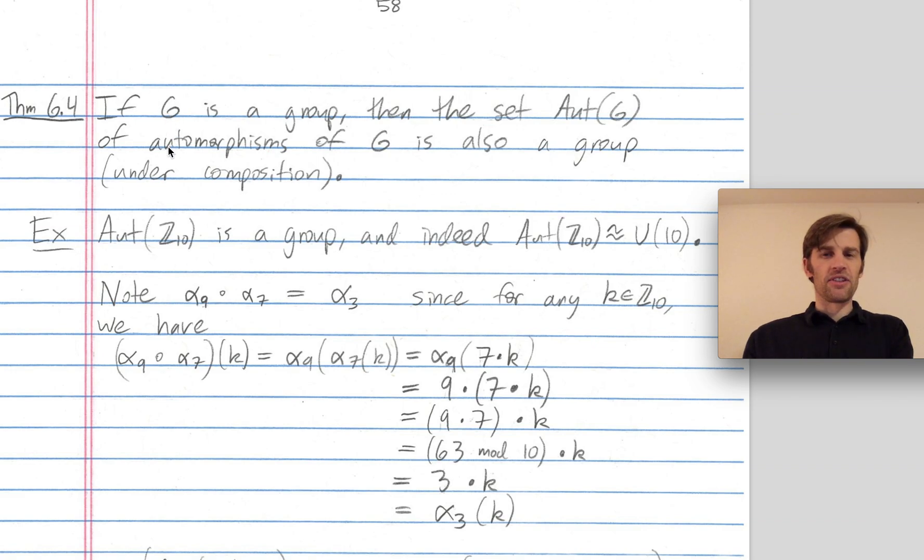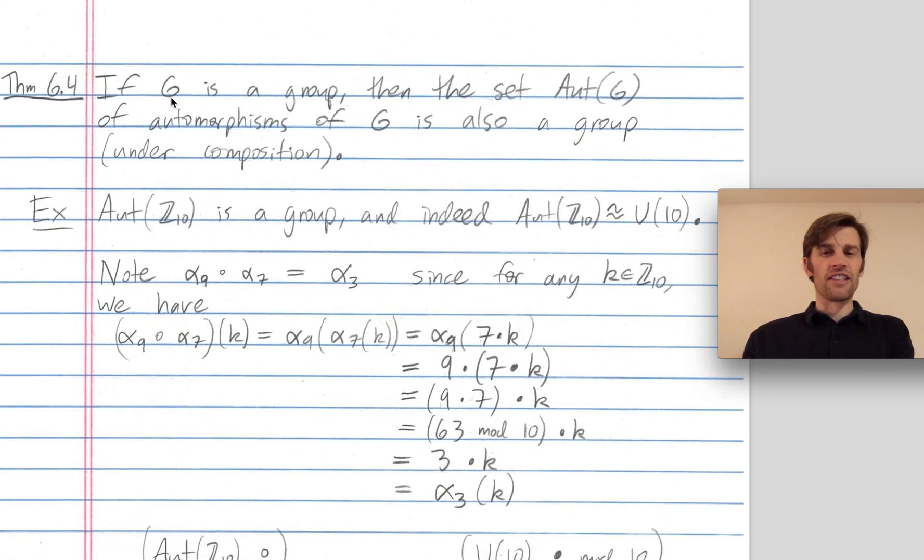The example you should keep in mind is G is Z mod 10. The automorphisms of Z mod 10 is the set consisting of alpha 1, 3, 7, and 9. And how do I combine two elements of this group? I just compose those isomorphisms.